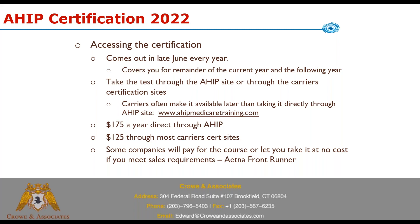The best way to access AHIP is through the carrier certification sites. What you shouldn't do is go directly through AHIPmedicaretraining.com. If you go through the AHIP site, you pay $175 for AHIP. If you take it through one of the carrier certs — like United, Aetna, Humana, Anthem — you can access AHIP through them and it still counts for all the companies. Taking it through the carriers gives you a discount of $125, saving you money.